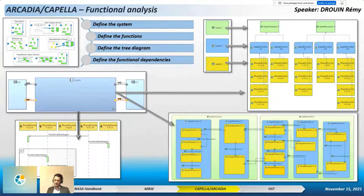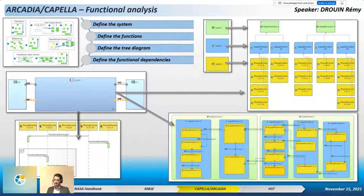Functional analysis is essential in architecture definition because it defines and justifies architecture components and their interface definitions. The different steps have to be performed according to the approach adopted, which can be top-down, bottom-up, or use-case-driven.